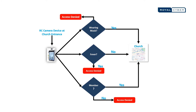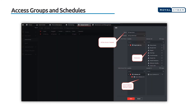The Reopen solution comes with specialized features like access groups and schedules, where special parameters can be specified within the device to only allow entrance to those people who are registered in the church's database at a given time, and that is completed via face recognition.